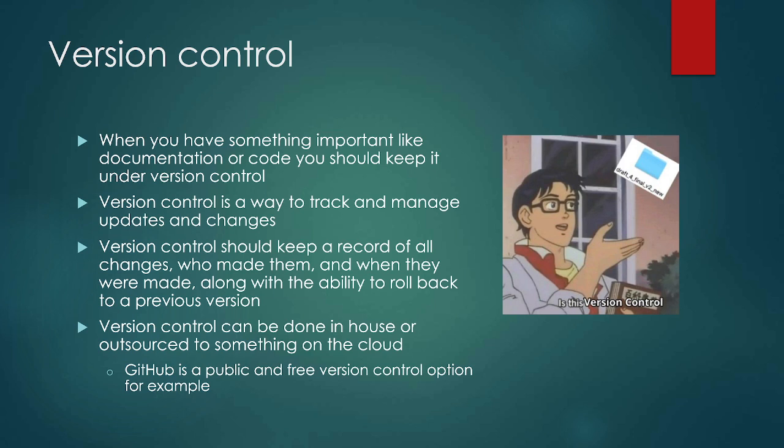Version control can be done in-house, outsourced, or in the cloud. Some companies will have in-house version control using things like GitLab. Some people use GitHub, which is a really popular one for people that write code. All of that version control is how we can actually keep track of what happened and who made that happen.